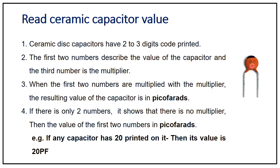For example, if only two digits are visible — say '20' — then the capacitor value is 20 picofarads. Similarly, if '10' is written, then the capacitor value is 10 picofarads.